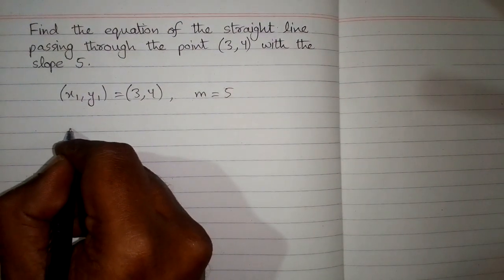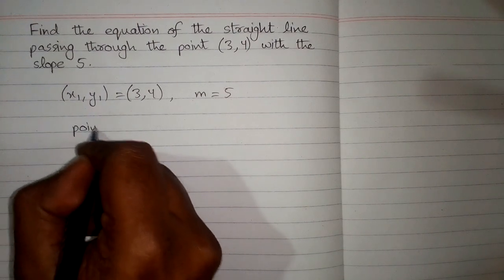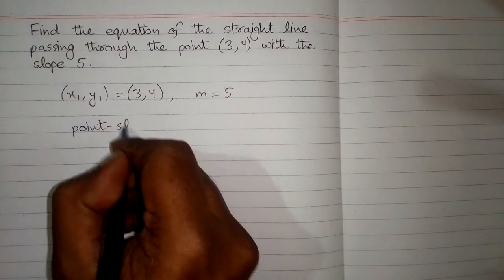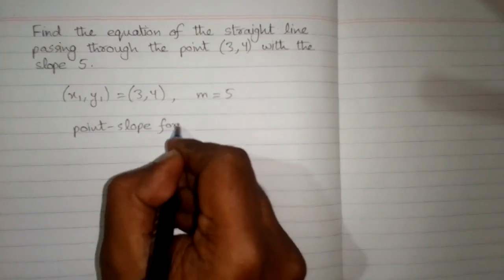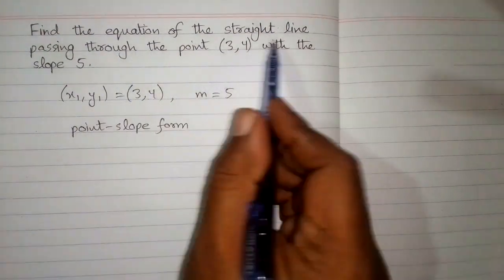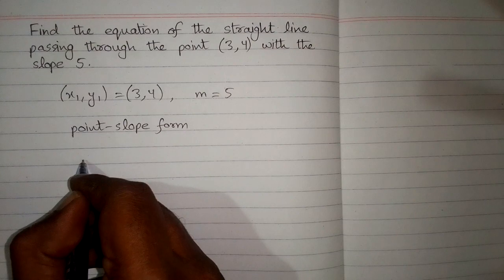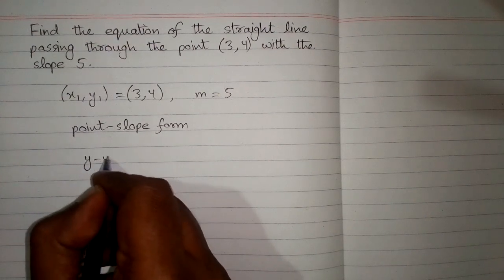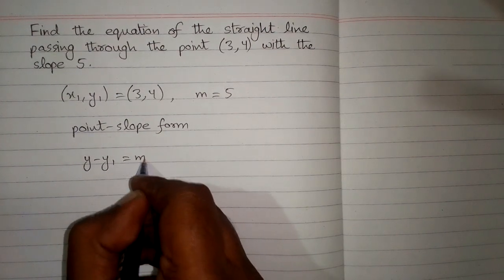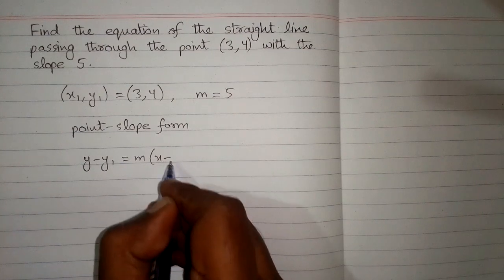So we will use point-slope form in order to find the equation of the straight line. The point-slope form is y minus y1 is equal to m times x minus x1.